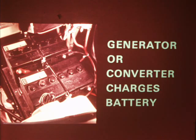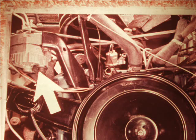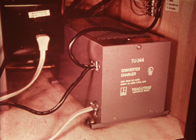Both the living area and automotive batteries are charged by the engine generator. The living area battery can also be charged by the converter. The motor generator battery is charged by the motor generator. The automotive generator does the charging when the motor home is traveling. The converter charges the battery anytime it receives 120 volt current from an external electrical connection or the motor generator.